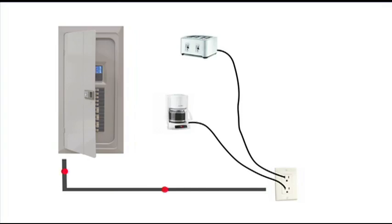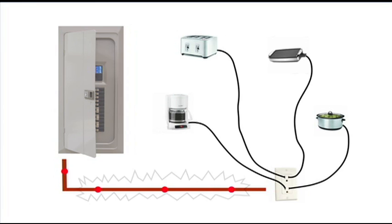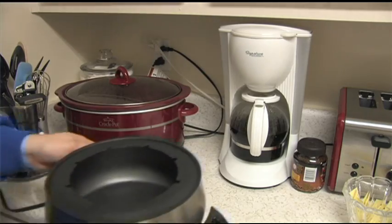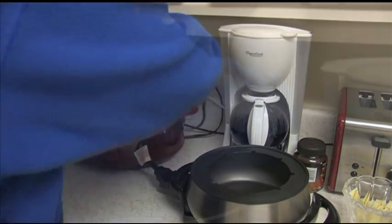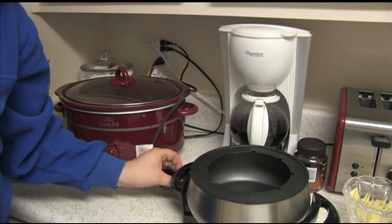An overload is where a circuit is pulling too much current and could potentially overheat and damage the wiring. This is often seen where too many devices are plugged into one outlet or on the same circuit. Once the breaker senses this overload, it trips, protecting the circuit from causing damage.